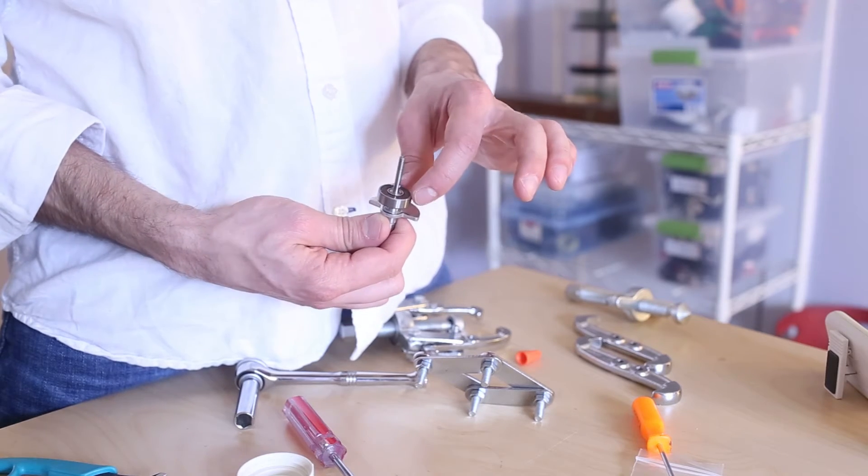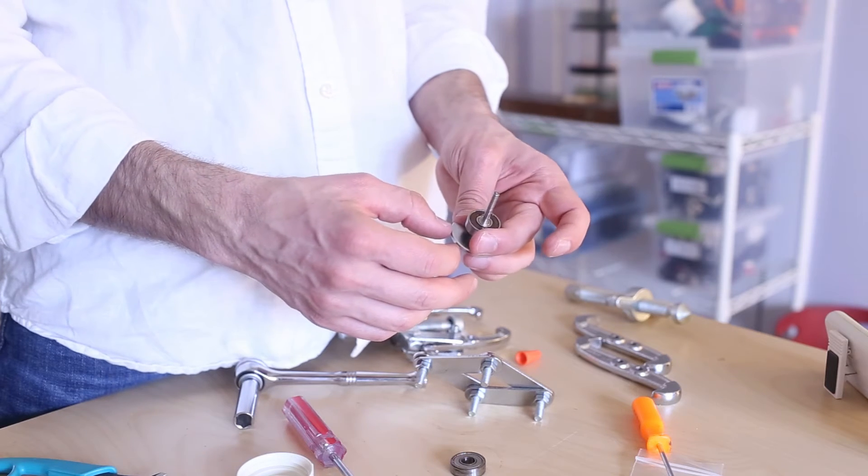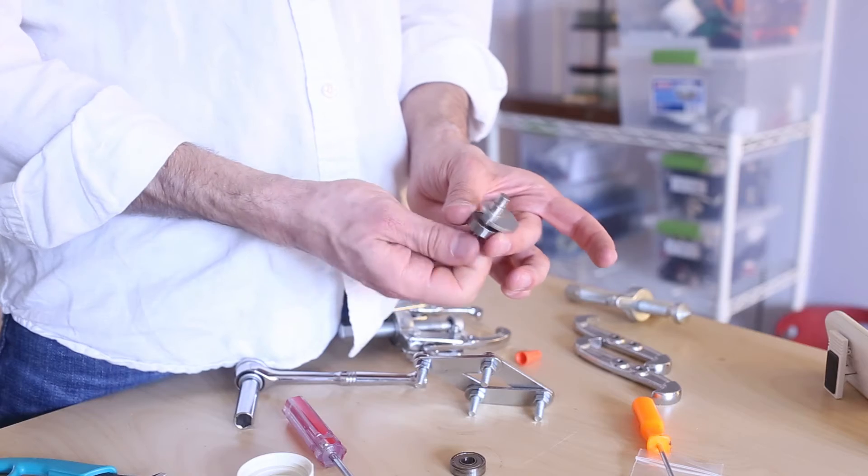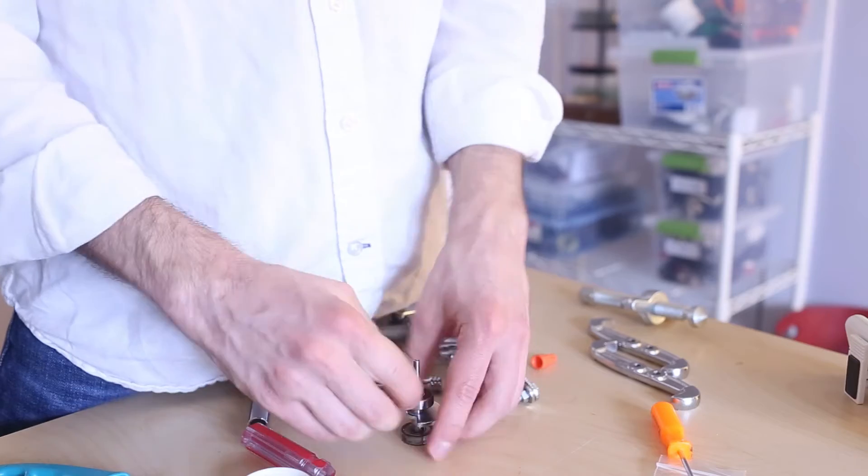These apparently are the bearings that are used in skateboard wheels. These are the sealed ones. These brown things I guess are like the seals that keep the greasing. But they have more rolling resistance because of it. So I'm going to shove this thing back on that shaft. Just push it down.